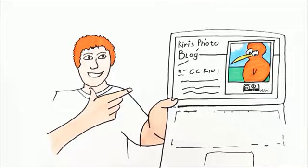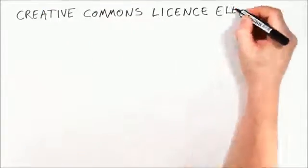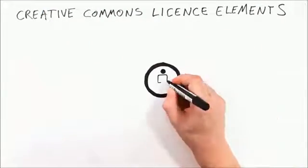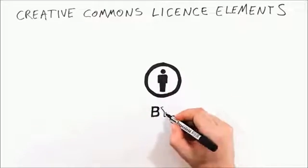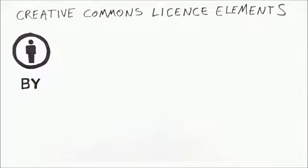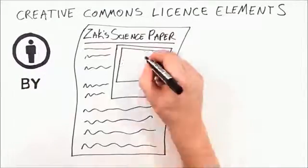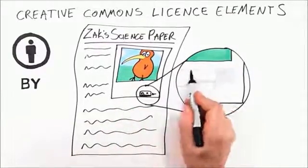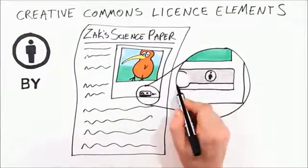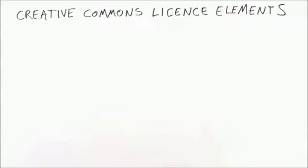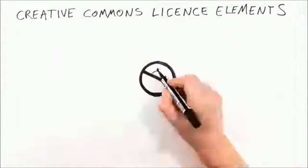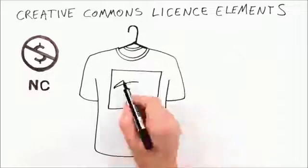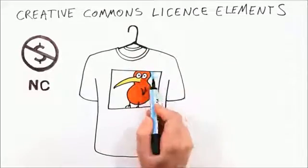There are more rules Kiri could have included. Creative Commons licenses are made up of license elements — you can think of them as rules — and each has its own special symbol. This is Attribution: it means that Zach must acknowledge Kiri when he publishes his science project containing her photo. This is Non-Commercial: it means no one else but Kiri is permitted to make money from CC Kiwi.